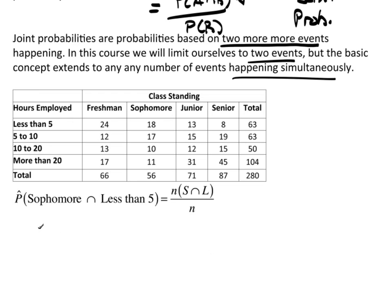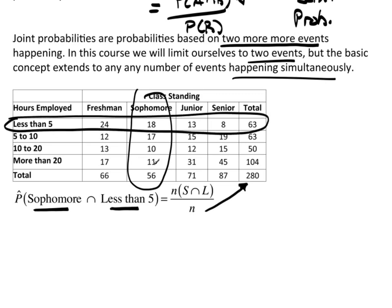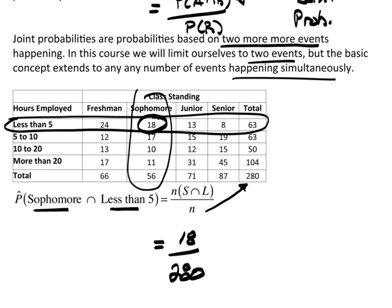Okay. So, again, this is talking about joint probabilities. I want the probability of a sophomore and less than five. Well, that's the number of ways that sophomore and less than five hours can happen divided by the number of sample space, which I'm just indicating here as n, the total number of people in this table. So, what I would do is sophomore and less than five. Well, here's a sophomore. Less than five is right here. Where do they join? Where do they share? Right there. It's 18. So this will be 18 divided by, what's the total number? 280.